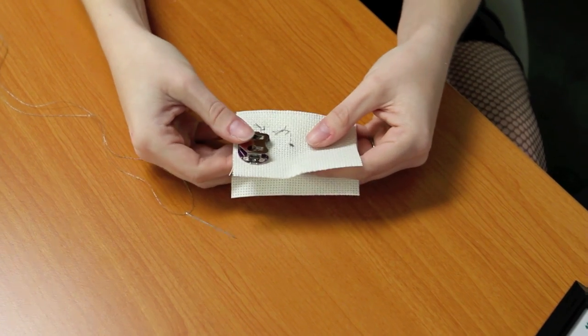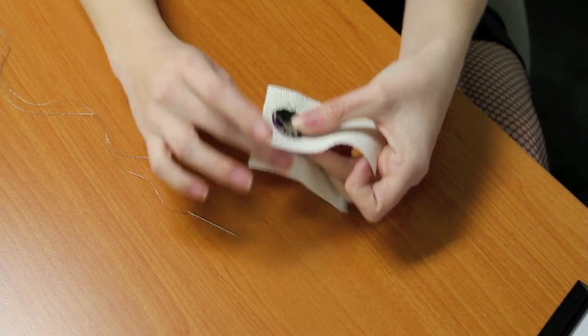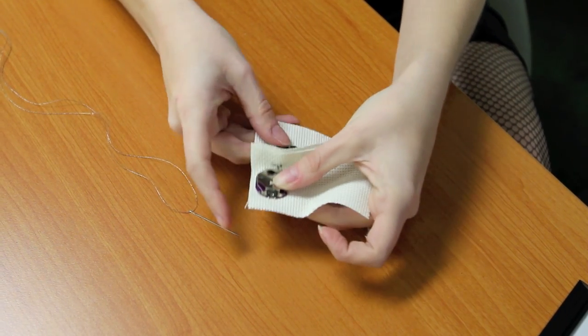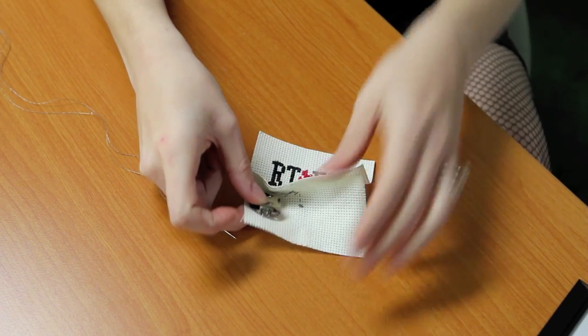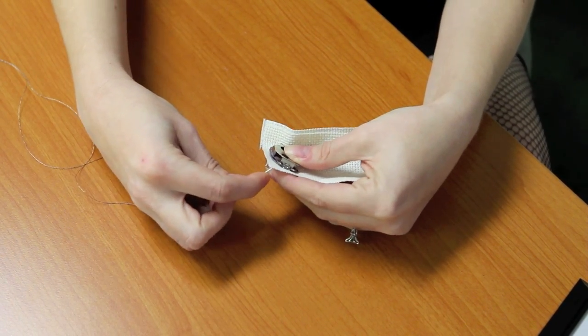All right, we're going to start the negative side of our circuit. We're going to sew down the battery holder exactly the same way we did on the positive side, and then we're going to connect it straight to the LED, since we don't need another switch. To sew down the negative side of the battery holder, you're going to repeat what you did for the positive side. To make sure that I don't sew through both layers of my fabric, because I don't want to show the stitching, I'm going to pull this one out, and then I'm going to start stitching through these holes.